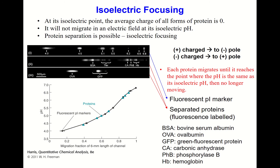Isoelectric focusing is a form of electrophoresis used to separate proteins. Assume you have a mixture of proteins, each with a different isoelectric point. One method is to apply an electric field across a plate whose pH changes continuously along its length.